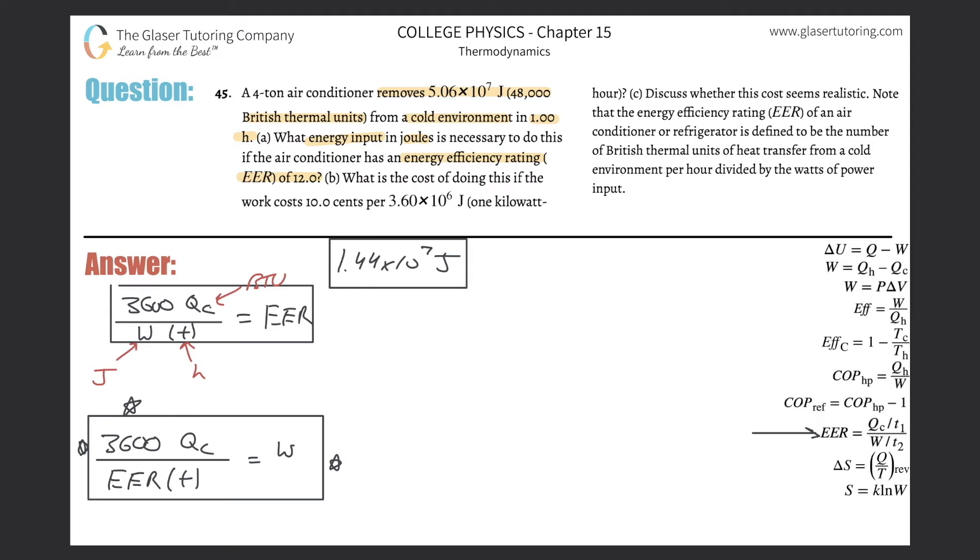All right, so letter B. What is the cost of doing this if the work costs 10 cents per this many joules, also known as one kilowatt hour? So, this is the amount of work put in. This is the energy company is going to charge you for using this amount of energy. So, we just have to basically do a fairly simple conversion here. Let me call that letter A, and this will now be letter B.